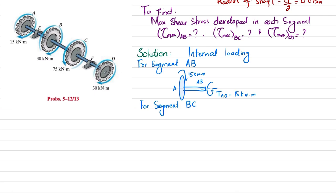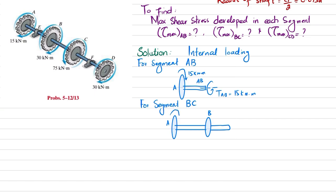Now we will find the internal loading for segment BC. You can see one gear on shaft AB, and then another gear with shaft BC. We have a torque of 15 kilo-newton meters in one direction and 30 kilo-newton meters in the same clockwise direction. To keep it in balance, we must have a counterclockwise torque, so T_BC equals 15 plus 30, which is 45 kilo-newton meters.